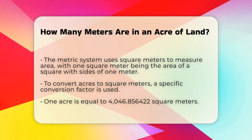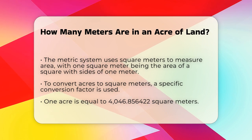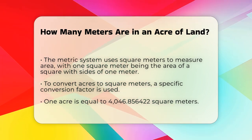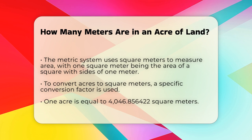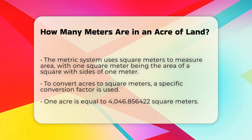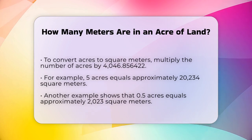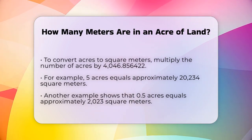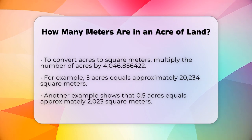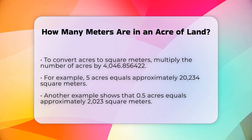Here's how you do it: simply multiply the number of acres by this conversion factor. For example, if you have 5 acres of land, you multiply 5 by 4,046.856422, which gives you 20,234.8211 square meters. So, 5 acres of land is approximately equal to 20,234 square meters.